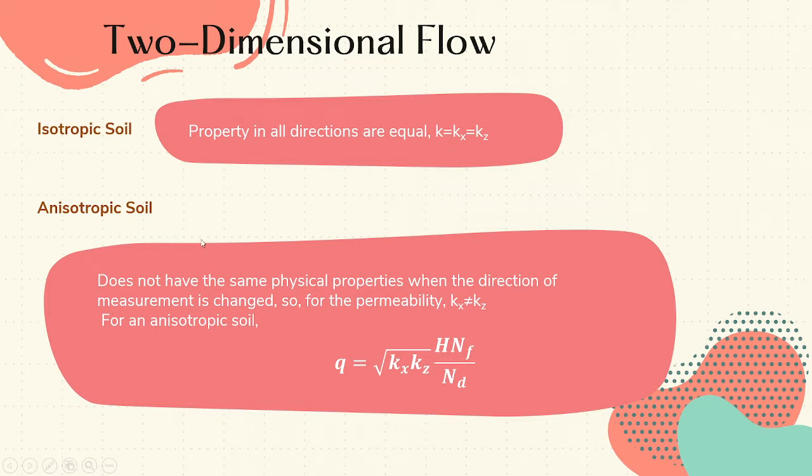On the other hand, when the soil is anisotropic, it does not have the same physical properties when the direction of measurement is changed.